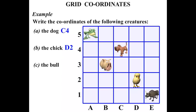What about the bull? Well, there's the bull. It's in the E column, and it's in the first row, row 1. E and 1. So we write E1.